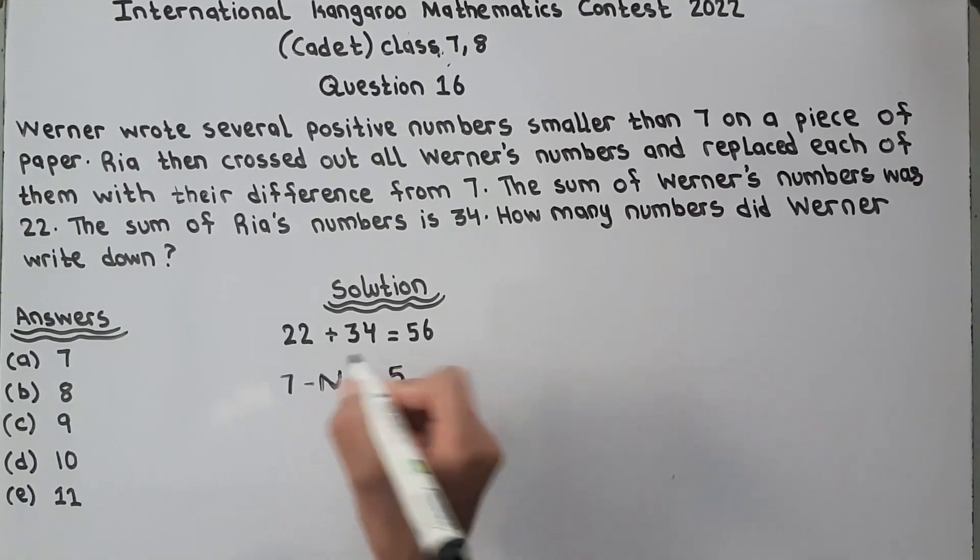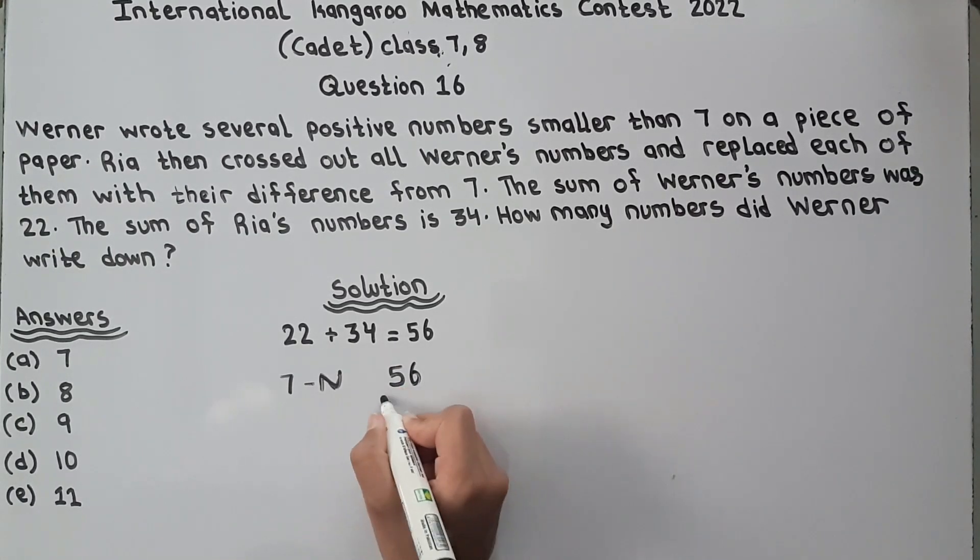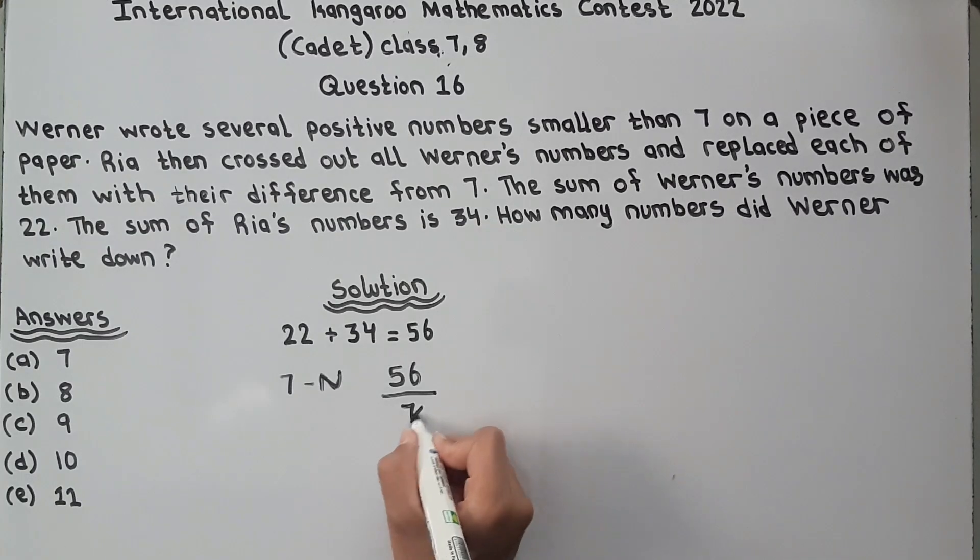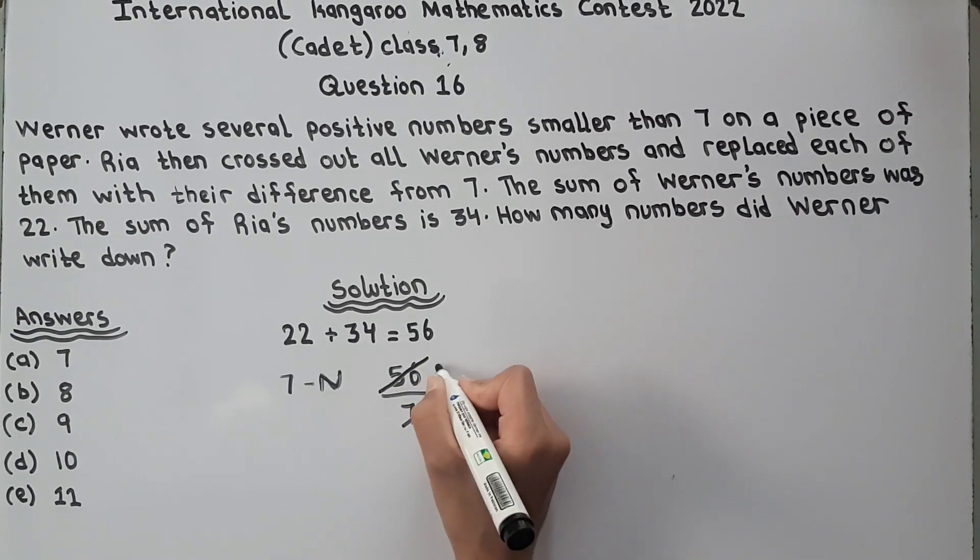56 is the total divided by 7. And because we have to find these numbers from 7 minus N and 7.